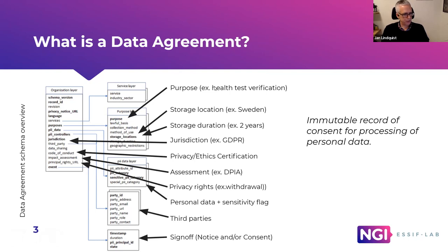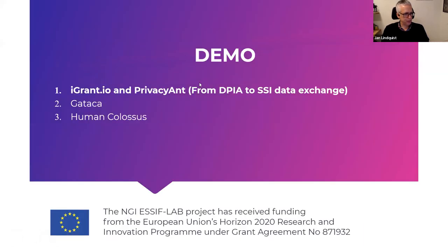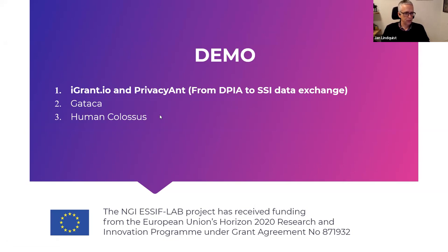So this is an introduction to the data agreement. Now I'm going to go into the three demos. First, we're going to get iGrant.io together with Privacy Ant, and we're going to demonstrate how DPIA is assisting in creating the data agreement. Then after iGrant and Privacy Ant, we'll have Getaca, then Human Colossus. And at the end we'll do next steps. After we're done, we can open up for questions in Q&A. So I'm going to hand over to Lau.